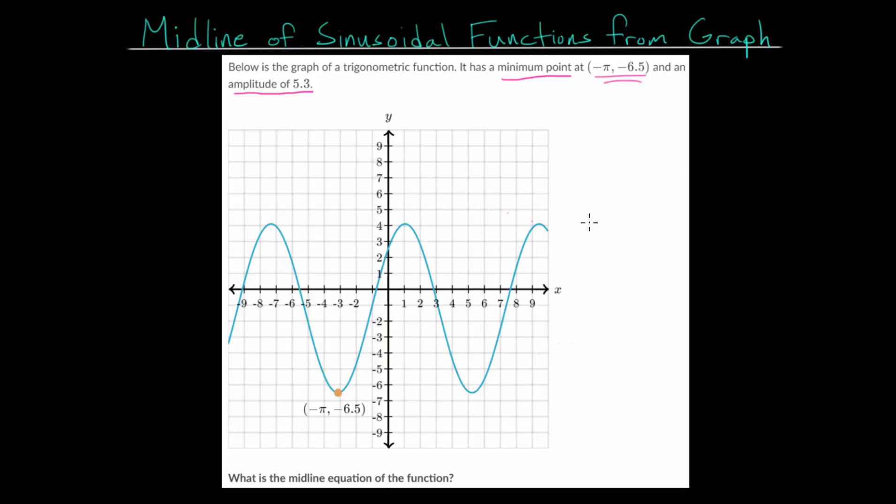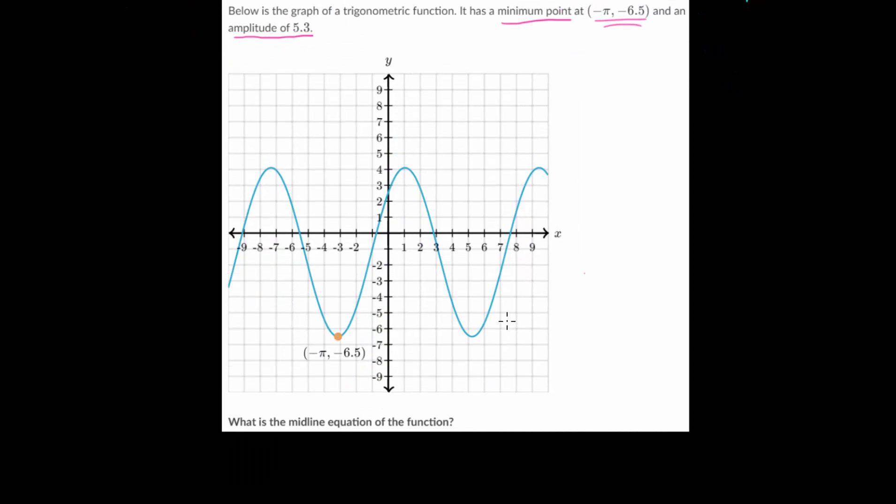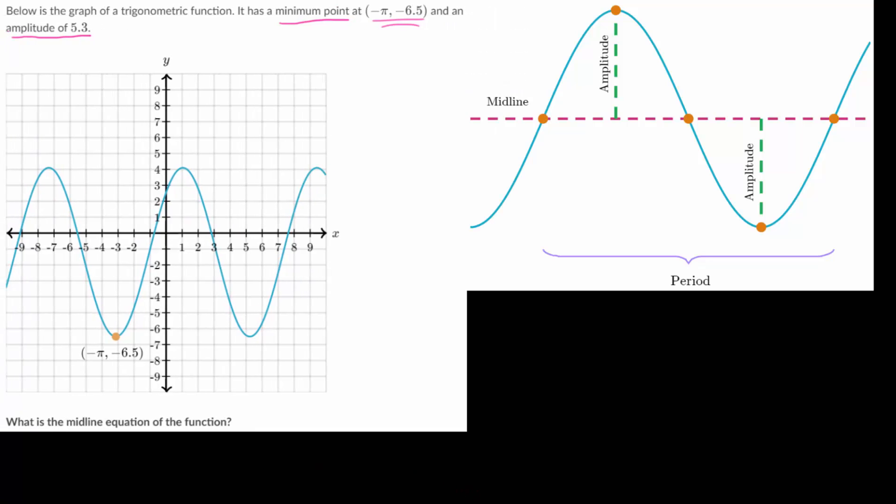And we need to remember the definitions for midline and amplitude. So let me first make a little bit of space and we can paste in a picture reminding ourselves of those definitions. And from this picture we can see that the midline is just the horizontal line that goes exactly through the middle of the sinusoidal function.